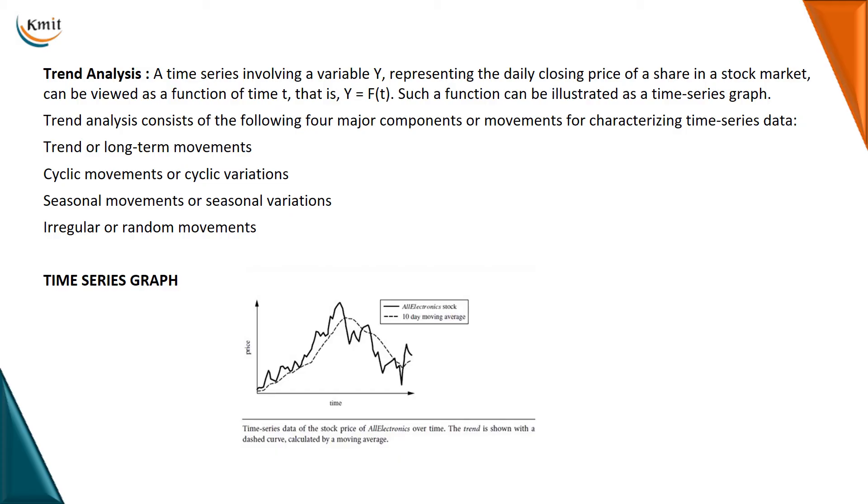Trend analysis consists of the following four major components or movements: trend or long-term movements, cyclic variations, seasonal movements, and irregular random movements. You can go back to your West side example. Quarterly I am changing my trend patterns. Next, cyclic movements - the same jeans in cycles. First three months I'm giving it, for the next three months no, again for the next cycle I'm getting the same pattern.